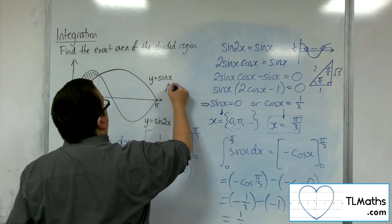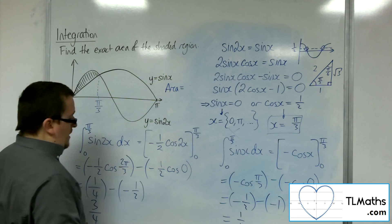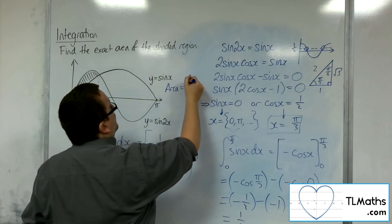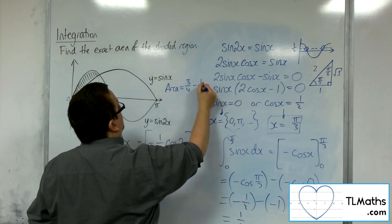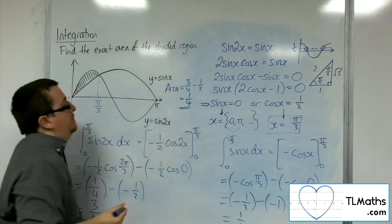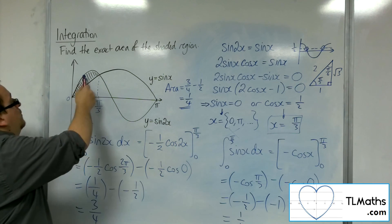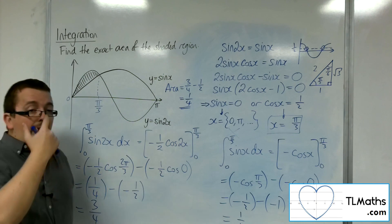So the area is equal to 3 quarters. Take away 1 half. It's actually just 1 quarter. So that exact area is 1 quarter.